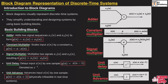Next is a signal multiplier. If we have two sequences x1(n) and x2(n), the signal multiplier will multiply these two sequences to get the output y(n) = x1(n) × x2(n). In the block diagram, we use a circle with a multiply symbol to represent the signal multiplier.